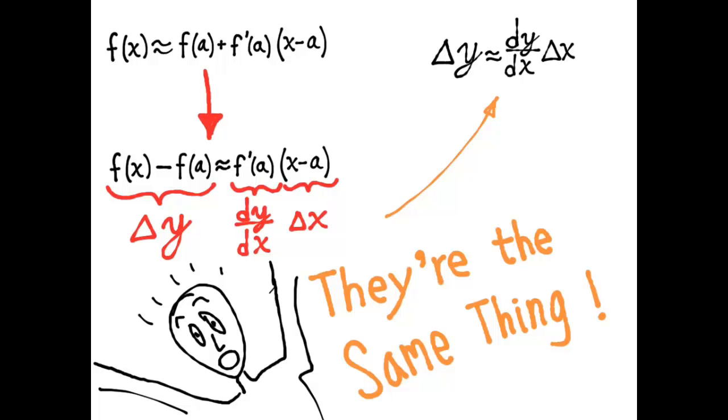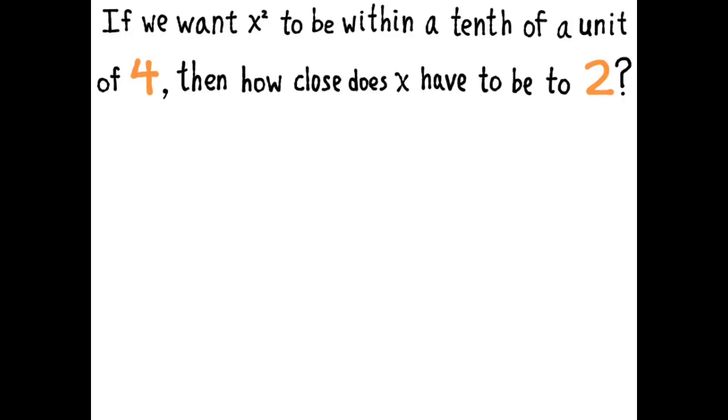So let's look at an application. If we want x squared to be within a tenth of a unit of four, then how close does x have to be to two? What does it mean to be within a tenth of a unit of four? It means you're within the bounds of 3.9 and 4.1. That is x squared constrained to be within a tenth of a unit of four.